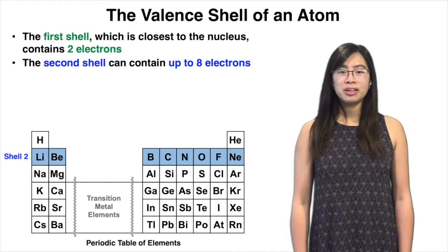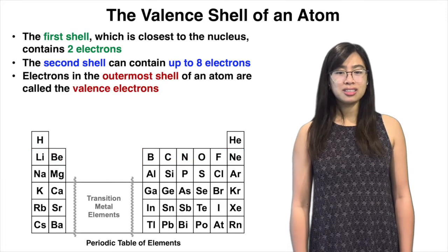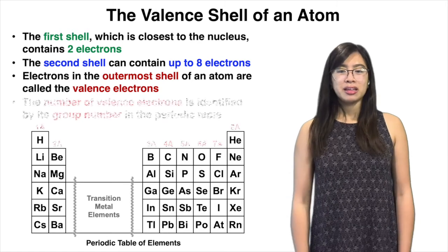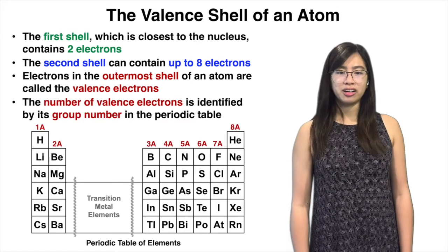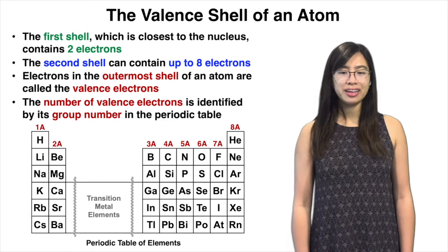But in organic chemistry, we're mostly interested in the valence electrons, which are the electrons in the outermost shell of an atom. The number of valence electrons in an atom is identified by its group number in the periodic table, highlighted in red.